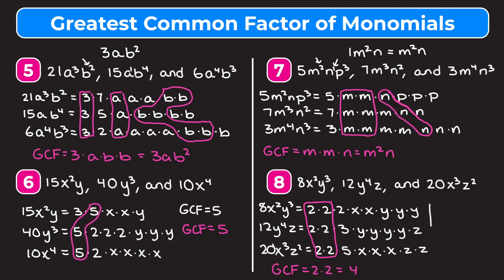The greatest common factor is 2 times 2, which equals 4. Using the shortcut: GCF of 8, 12, and 20 is 4. x doesn't show up in every term, y doesn't show up in every term, and z doesn't show up in every term, so none go in our answer. We get a greatest common factor of 4. Hopefully this video helped you understand how to find the GCF of monomials — check the link in the description for a free practice worksheet.